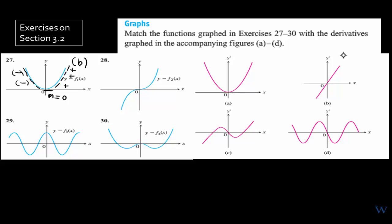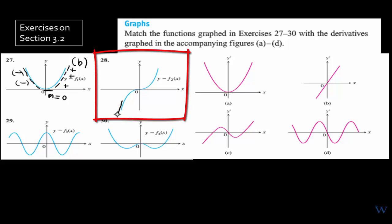In number 28, every line tangent to the curve is positive — they're all positive. It eases out to a slope of zero at one point, but all tangent lines still have positive slopes. Even to the right, the slopes are still positive. So among the three remaining options, we need to find which one matches number 28.